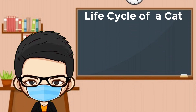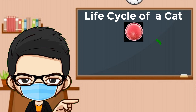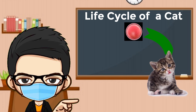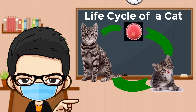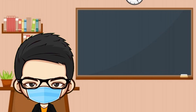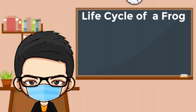Second, the life cycle of a cat — it is made up of three stages: it starts with an egg, then a young kitten, then an adult. Third, the life cycle of a frog is made up of three stages.